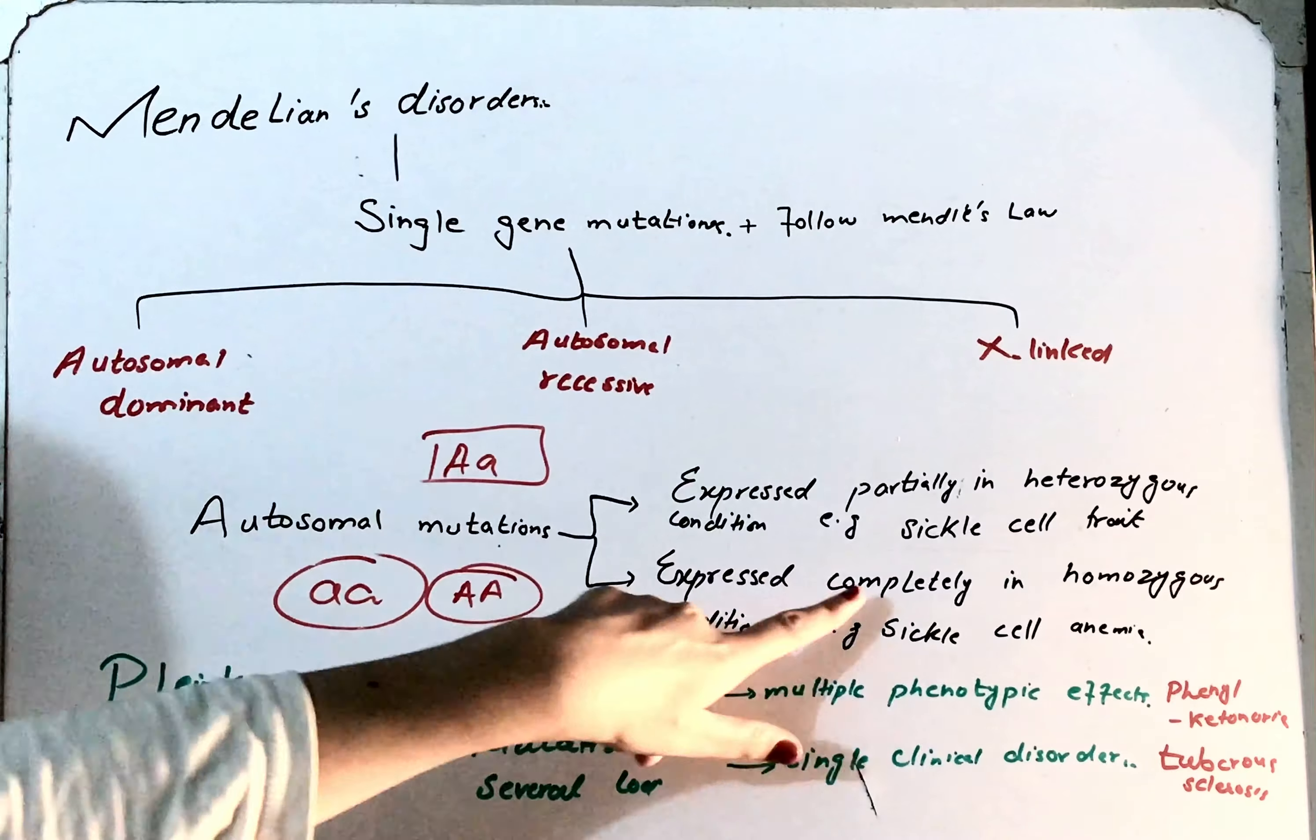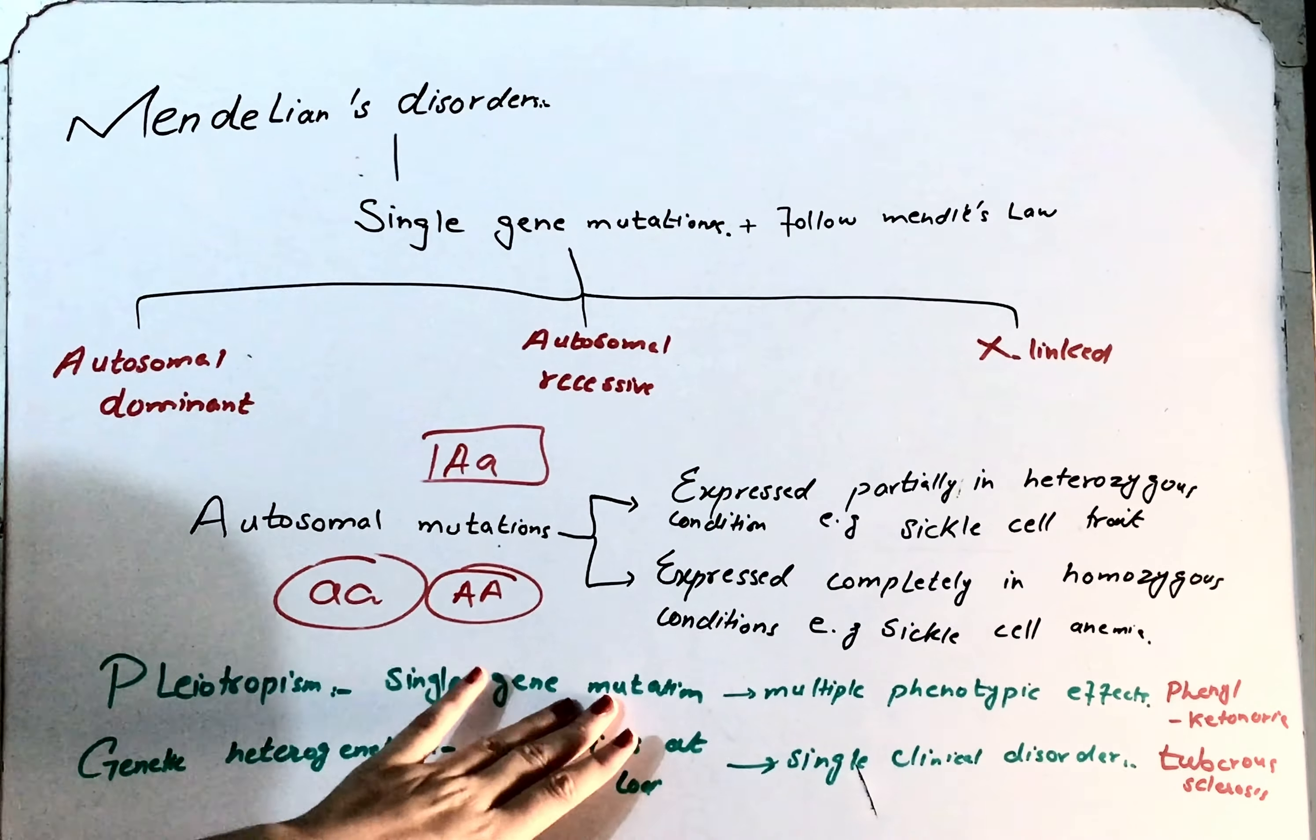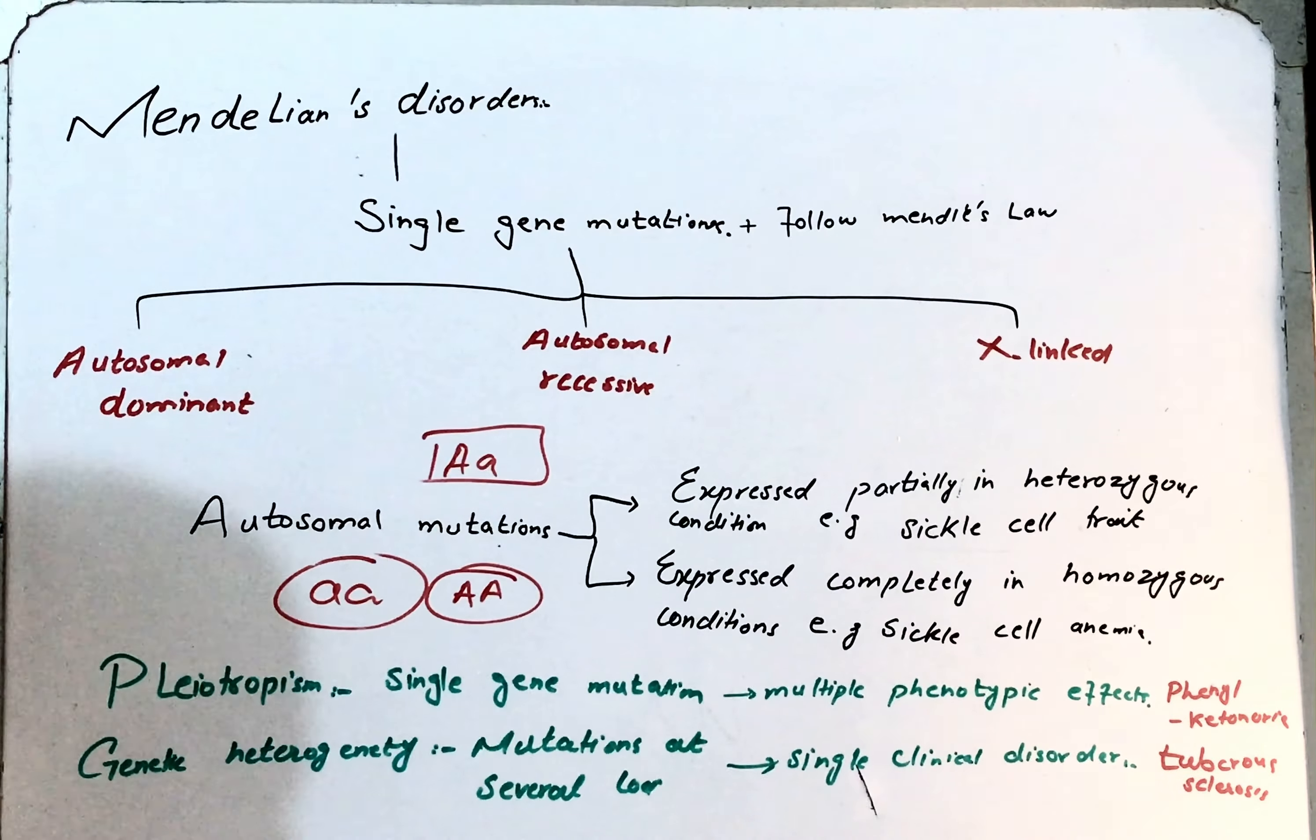Sickle cell anemia is again an example of pleiotropism. There is a single gene mutation, but there are many effects like lysis of RBCs, splenic fibrosis, organ infarction, bone changes, etc.